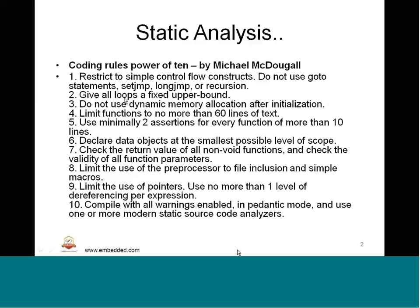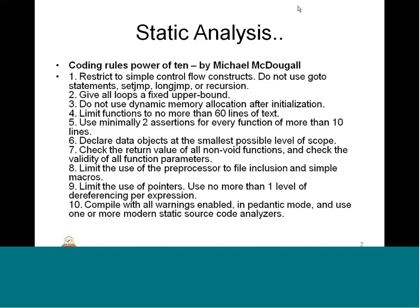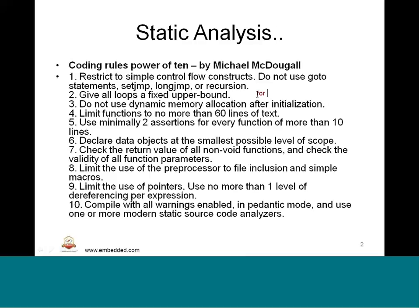These are called golden rules by Michael McDougall. The second rule: give all loops a fixed upper bound. Definitely we need for loops, but with a fixed bound where they will always complete and always end. For example, a for loop with i less than some fixed value like 10 or 100 — avoid using constant expressions without a bound. This will definitely lead to an upper bound, which must be used in for loops or while loops.